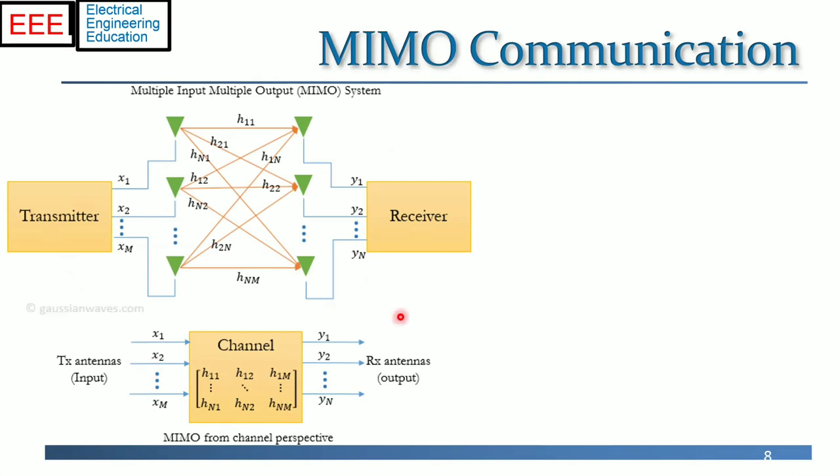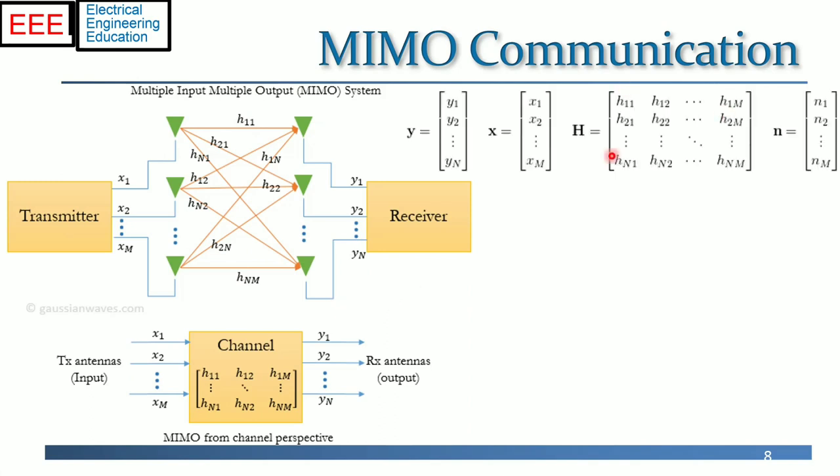The direct path formed between antenna 1 at the transmitter and antenna 1 at the receiver is represented by the channel response. The channel response of the path formed between antenna 1 in the transmitter and antenna 2 in the receiver is expressed as H 1 2, and so on. Thus, the channel matrix is of dimension N by M. The received vector Y is expressed in terms of the channel transmission matrix H, the input vector X, and noise vector N. Note that the response of the MIMO link is expressed as a set of linear equations.